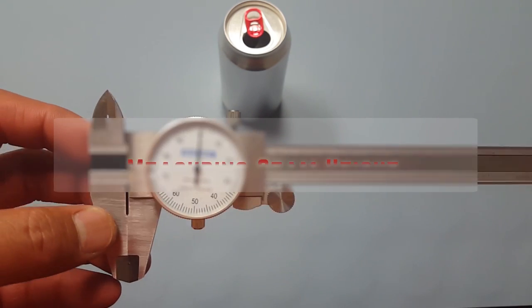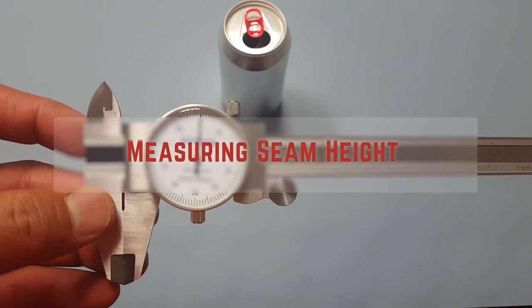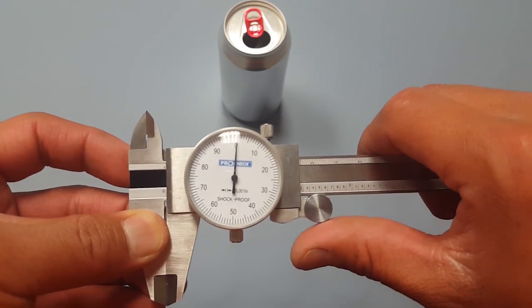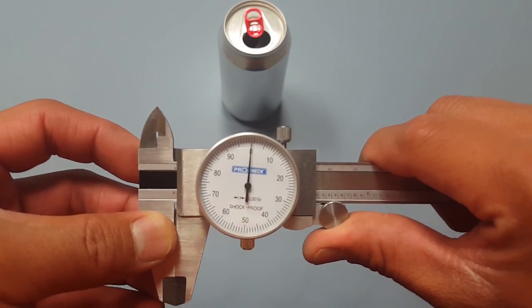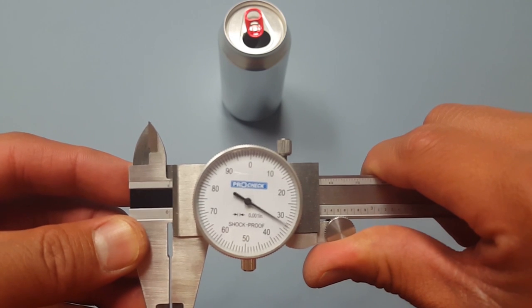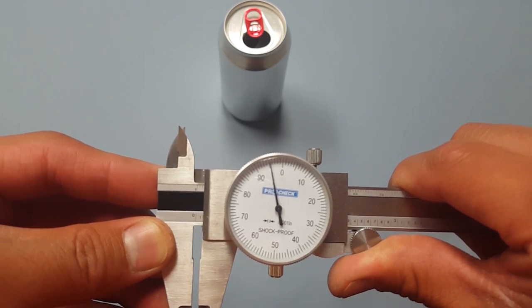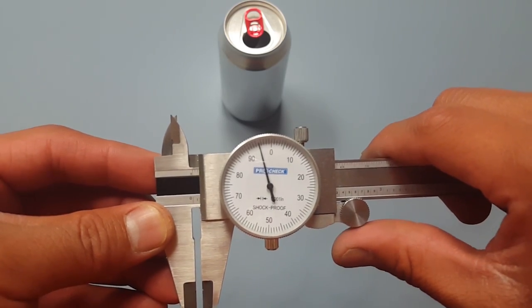These are your veneer calipers. You'll use these to measure your can seam height, your body hook and your cover hook. This works a lot more simpler than the can seam micrometer as you will never go past 100 thousandths and whatever the needle points to, add your ticks and that's your number.